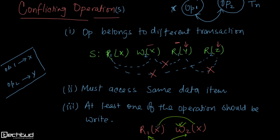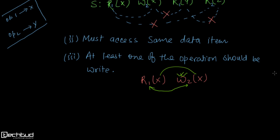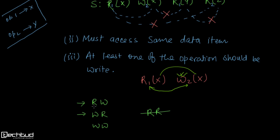So the conflicting operation pairs are: read-write (RW), write-read (WR), and write-write (WW). We do not have conflict in read-read. The reason RW and WR are written separately is that in database operations, sequence matters — read-then-write has different significance than write-then-read — so they are treated differently.